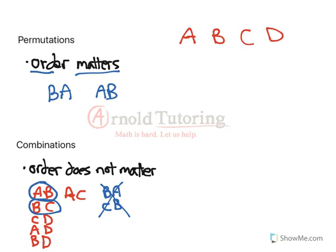Because of that — because we're counting those extra arrangements in permutations — permutations are always going to be higher than combinations. So if we have a group of ten things and we're choosing five of them, the combinations will be a lot less than the permutations, because we're not double counting so many of those things.